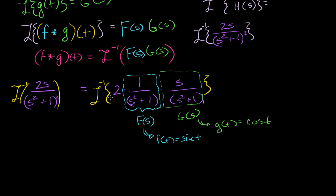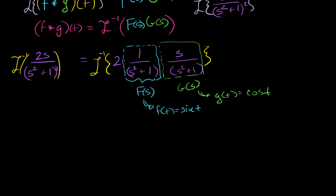When you take the inverse Laplace transform, you can factor out constants. So if we draw a box around the whole first part — 2 over (s squared plus 1) — that's F of s, the Laplace transform of 2 sine of t. And G of s is s over (s squared plus 1), the Laplace transform of cosine of t. So this expression is the product of the Laplace transform of 2 sine of t and the Laplace transform of cosine of t.